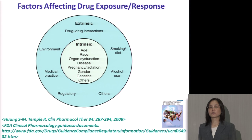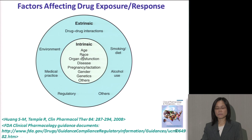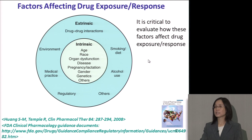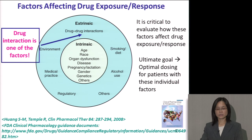We know that many factors can affect drug exposure and, in turn, its response. This diagram summarizes the key intrinsic as well as extrinsic factors based on the ICH E5 guideline that can affect a drug's exposure — including patient intrinsic factors such as age, race, organ dysfunction, disease state, gender, genetics, and major extrinsic factors such as drug-drug interaction based on co-medication and other environmental factors. During drug development, it's critical to evaluate how these factors affect drug exposure and safety or efficacy responses. The ultimate goal of clinical pharmacology is to understand those factors to optimize dosing for patients. Drug-drug interaction is just one of the factors we need to consider.